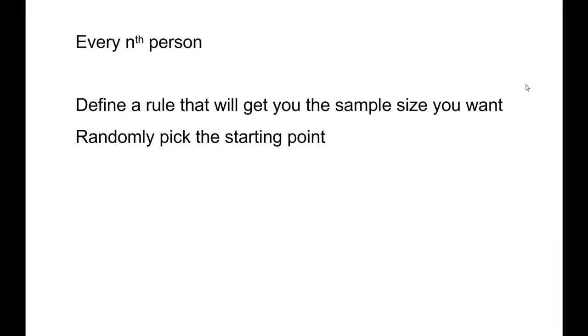Let's define a rule that's going to get us the sample size we want and then randomly pick our starting point, so it's not always the first person and then every 9 people from there or every 12 people from there. We start at some random spot and then start counting every so many people.